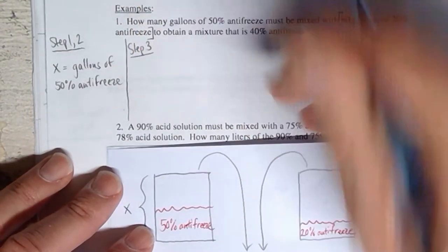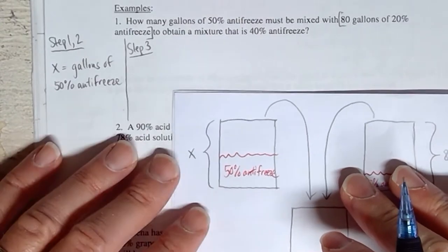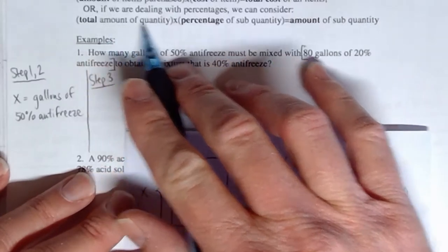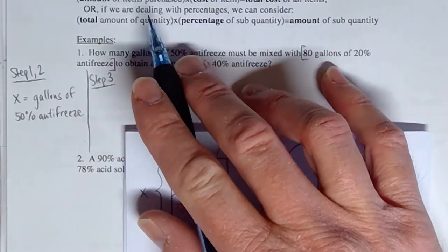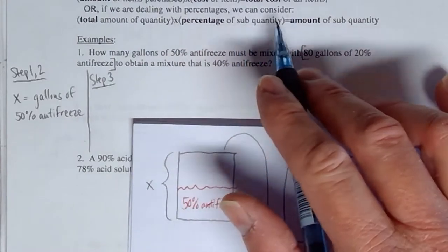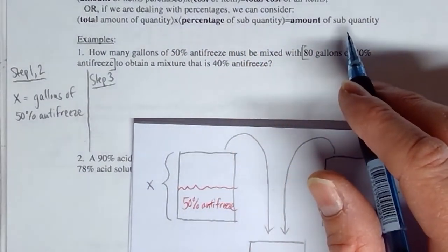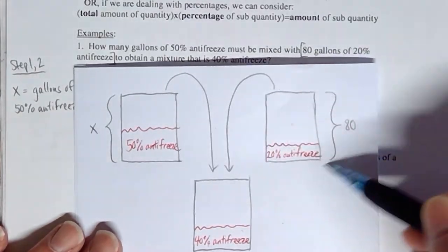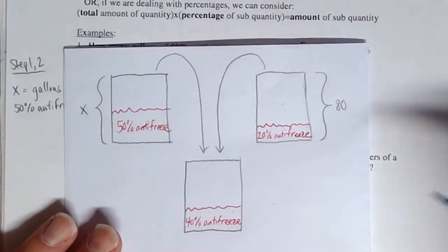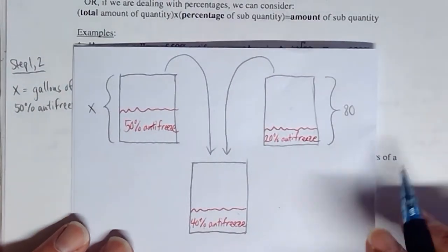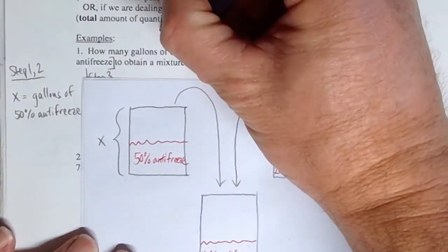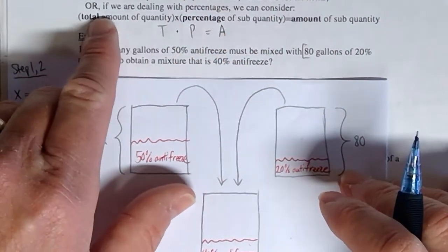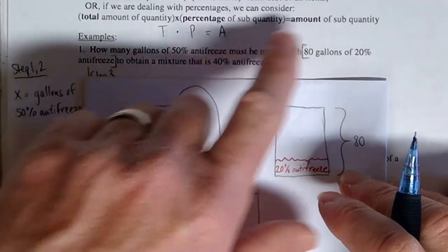Here's the formula: Total amount of quantity times the percentage of the subquantity equals the amount of the subquantity — shortened as T times P equals A. T for total, P for percentage, A for amount. T means the total amount in the entire jar, so for the 20% jar, T would be 80.